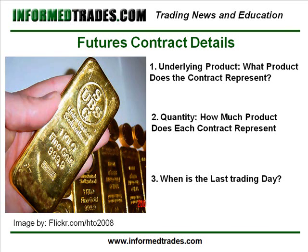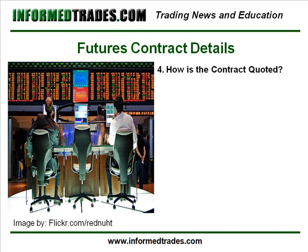The fourth component that we as traders will all want to know about the futures contract we are trading is how the contract is quoted. As an example here, the E-mini S&P contract trades in increments of 0.25 points, and each 0.25 point move represents a value of $12.50 per contract traded. Crude oil, on the other hand, trades in increments of 1 cent per barrel, which represents a value of $10 per contract traded. The minimum price movement in each futures instrument is what is known as a one tick move in the market. Each contract also has a maximum price fluctuation that it can make in any one trading day, referred to as a limit move, something which we will cover in later lessons.